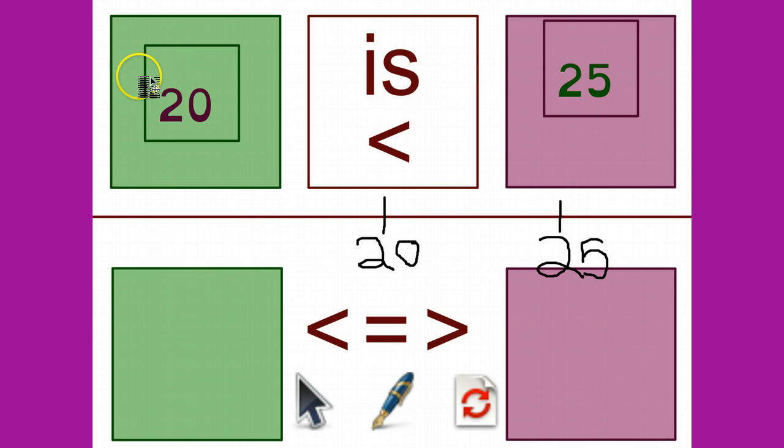And that's how we use an open number line when comparing numbers.